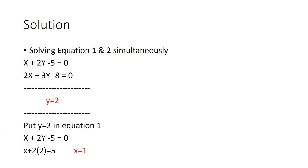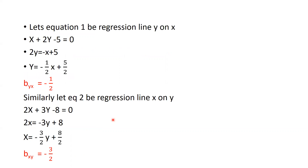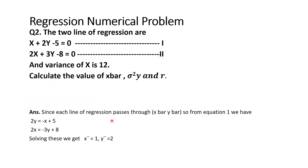After this, what we have to do is put the value of y — y equal to 2 — in equation 1. So this is my first equation: x plus 2y minus 5 equal to 0. I will put the value of 2 in place of y, and we get x̄ equal to 1. Now we have got both values: ȳ equal to 2 and x̄ equal to 1.